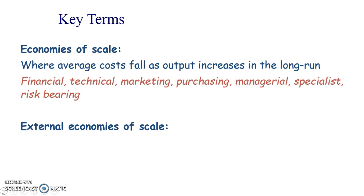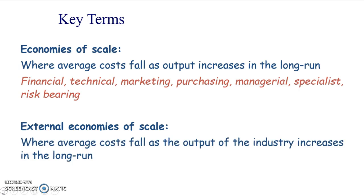We can get lots of reasons for this, which I'll go through in later slides. Really, that definition is of something we call internal economies of scale — that's when average costs are falling because the output of a particular firm is increasing in the long run. Whereas external economies of scale are where average costs fall as the output of the industry increases in the long run. So we've got a few reasons there: cooperation, labour.